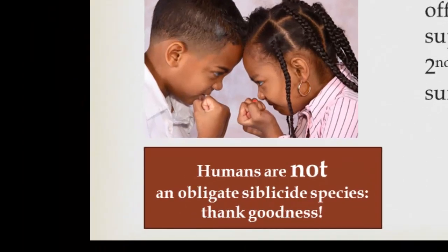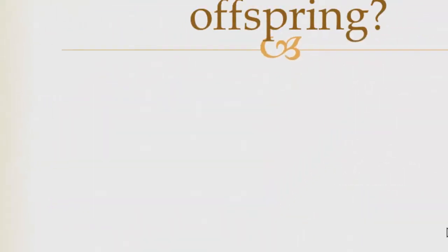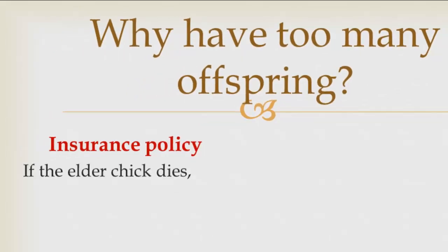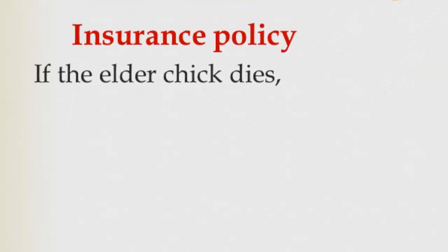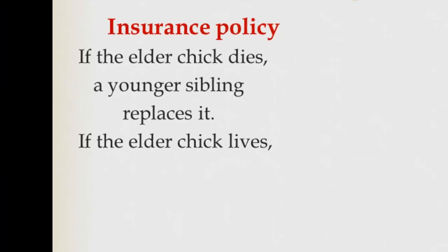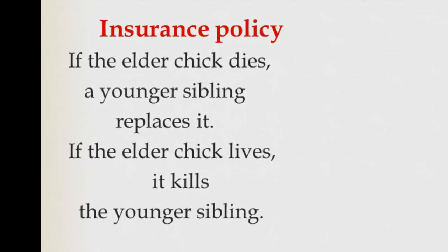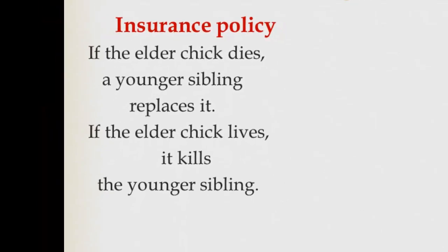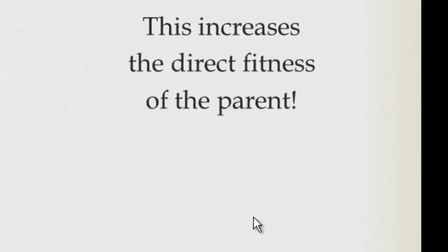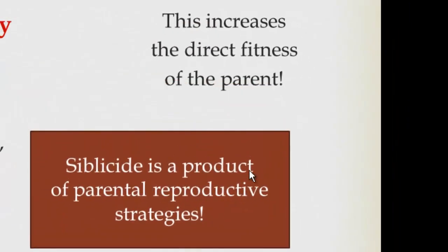Fortunately, humans are not a species where we see obligate sibilicide, but we certainly do see sibling rivalry. Why would having too many offspring evolve as a reproductive strategy? One hypothesis is an insurance policy view: from the parent's perspective, if the elder chick dies, the younger sibling will hatch and replace it. If the elder chick lives, it will peck the younger sibling to death. The result is that parents following this strategy should produce more offspring over more breeding seasons, increasing direct fitness — but at the cost of sibilicide.